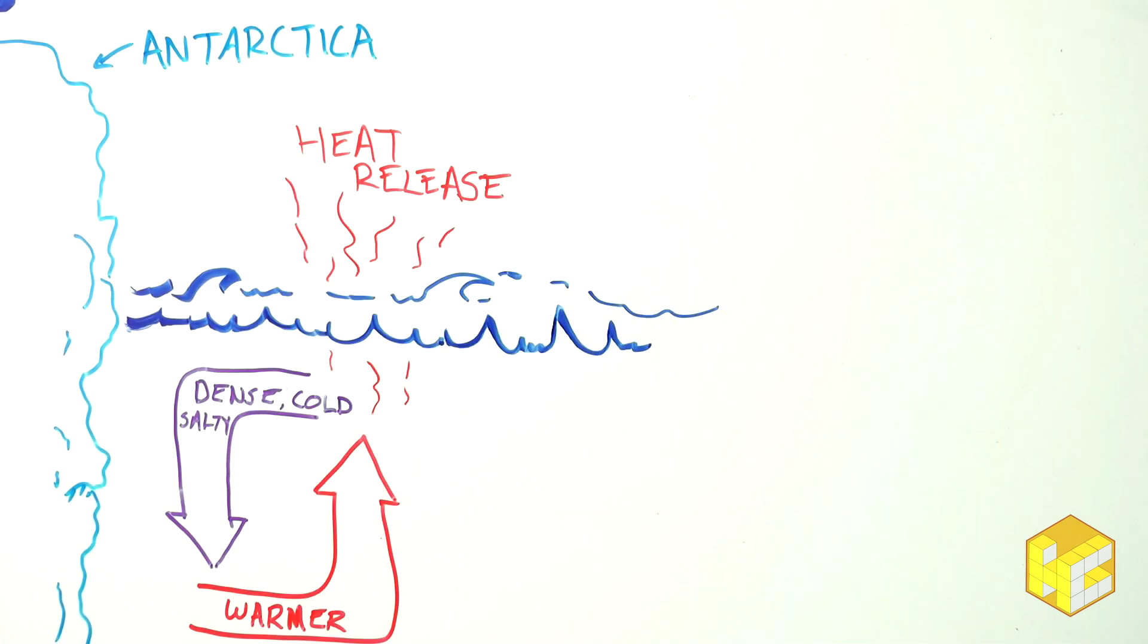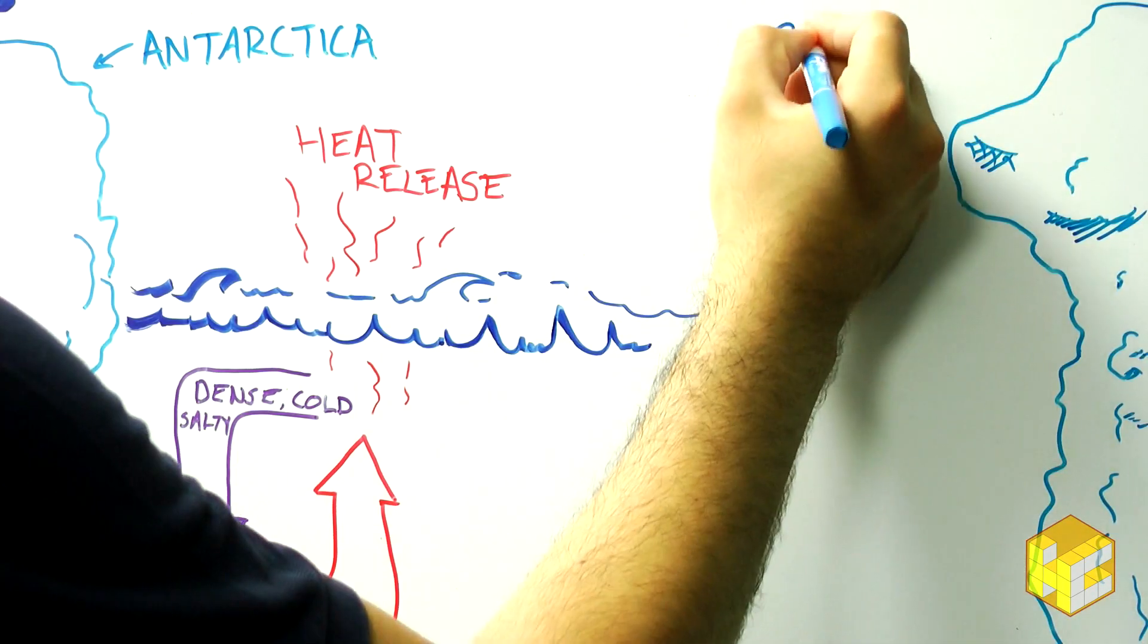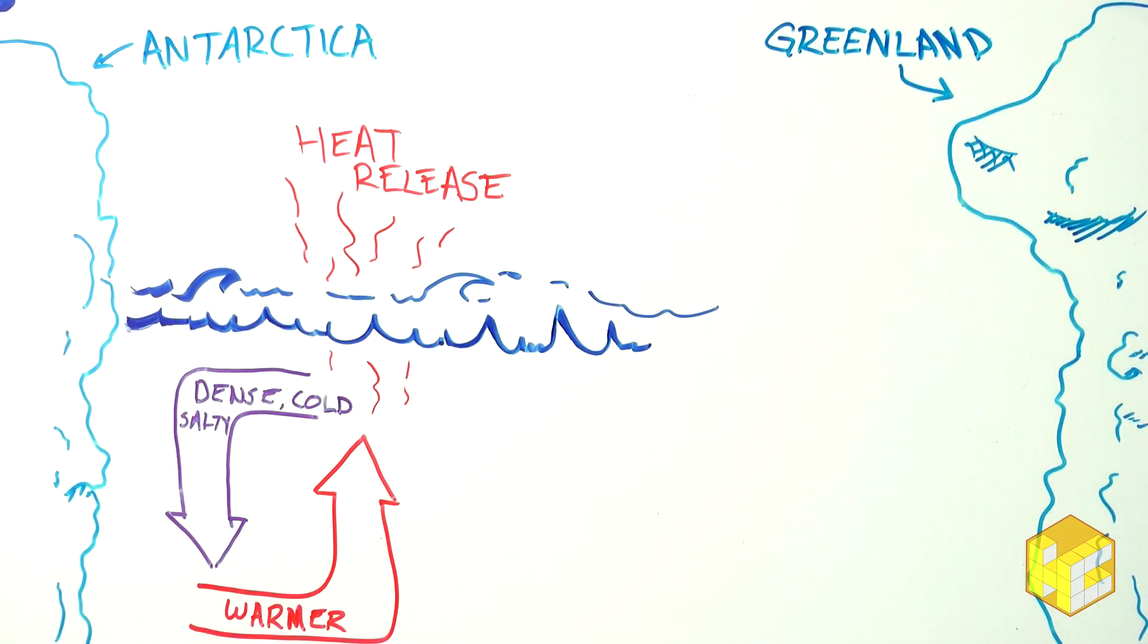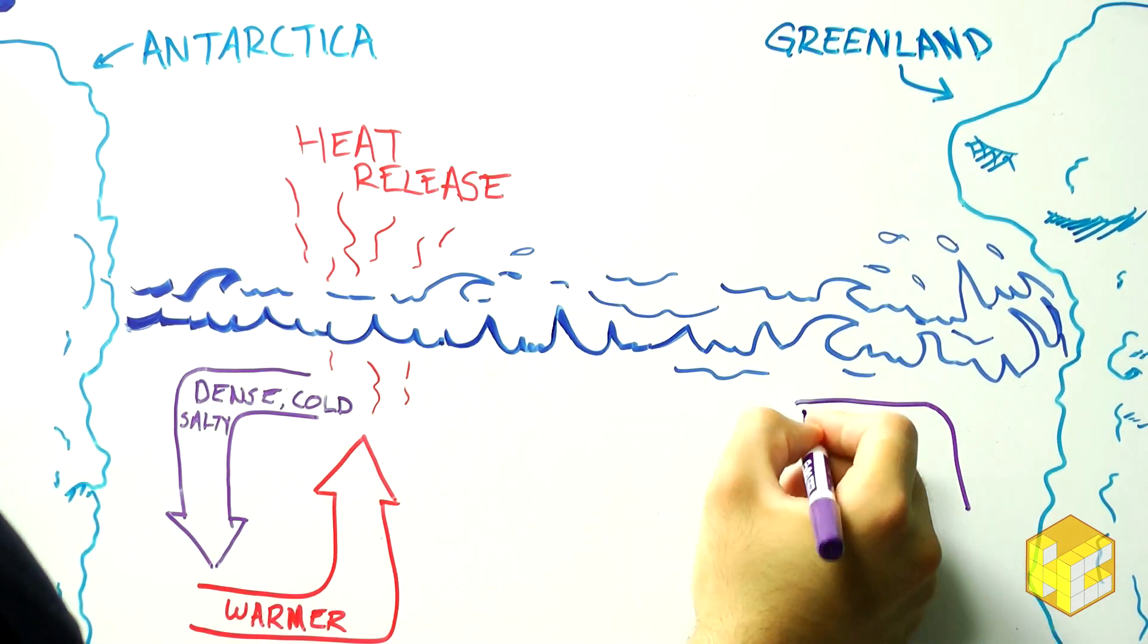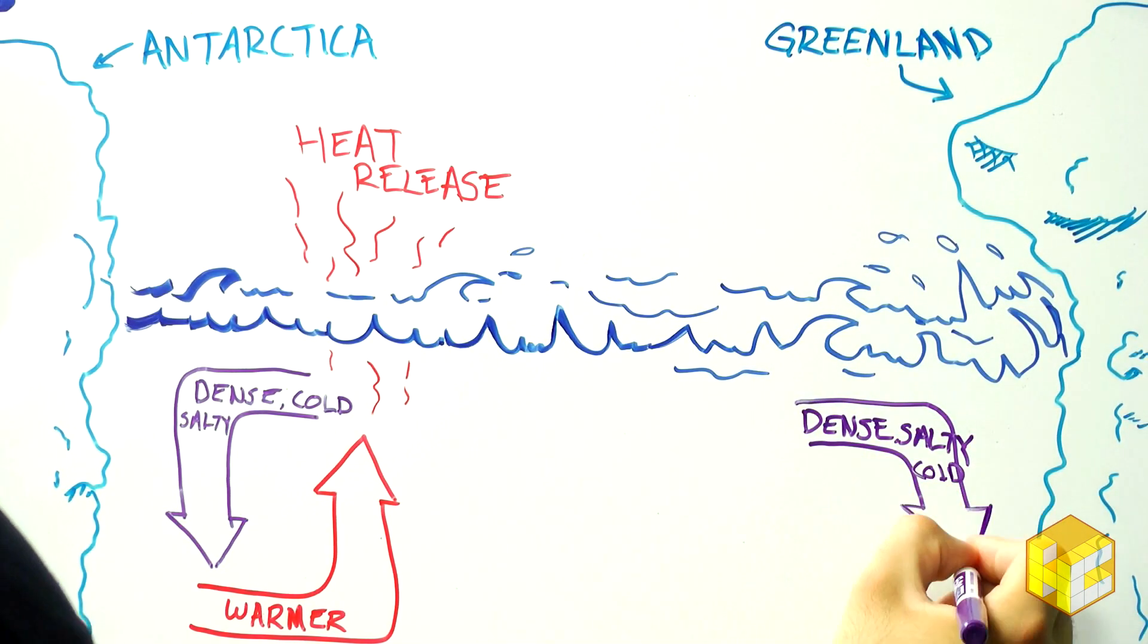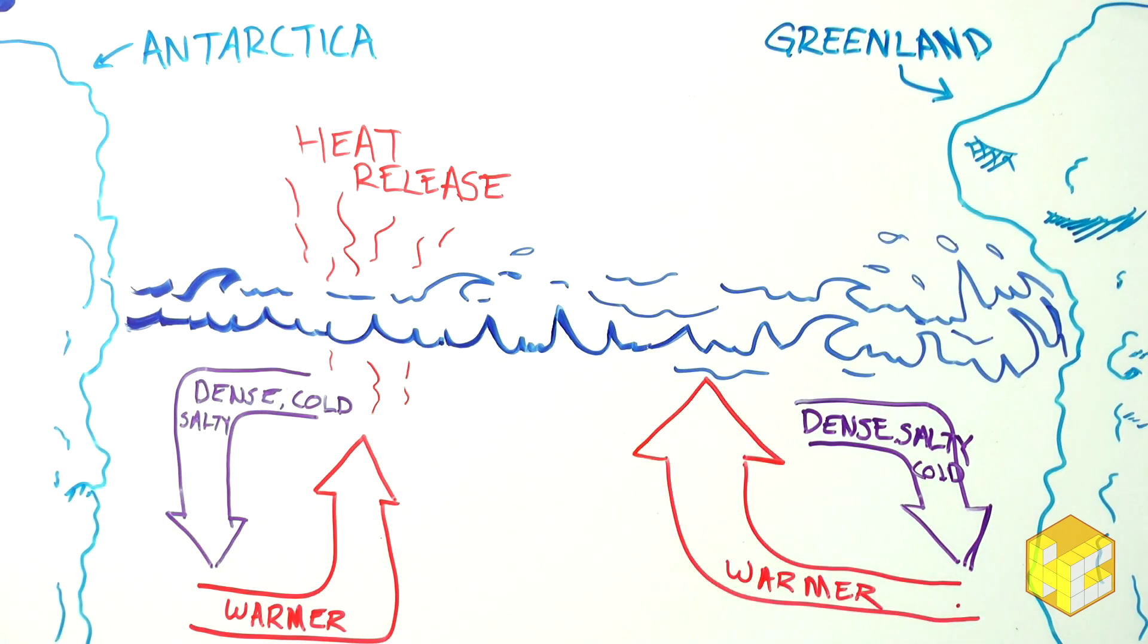In Antarctica, this layer of cold, salty water near the bottom of the ocean is called Antarctic bottom water, and in the North Atlantic, it's referred to as North Atlantic deep water—NADW and AABW for short.